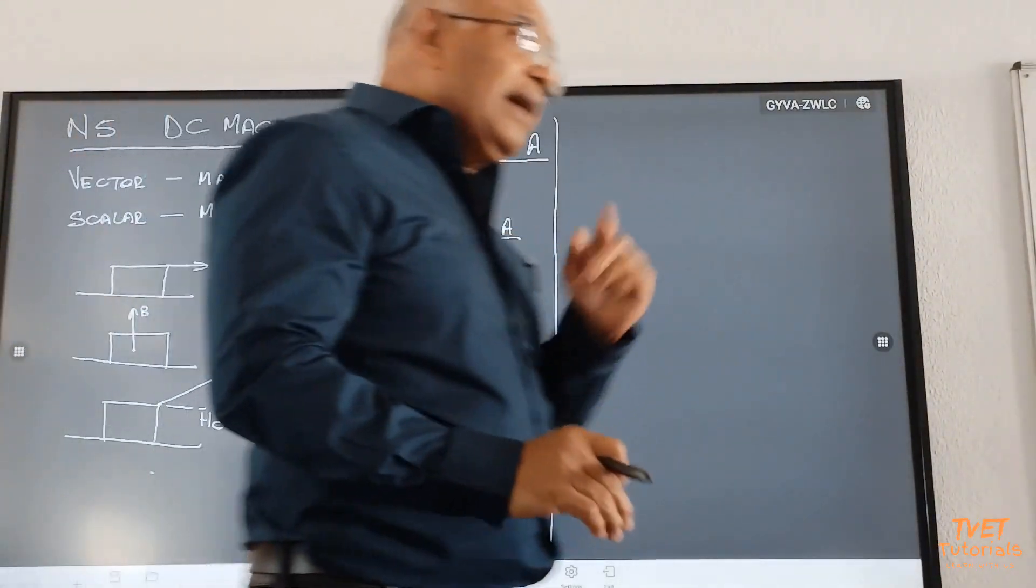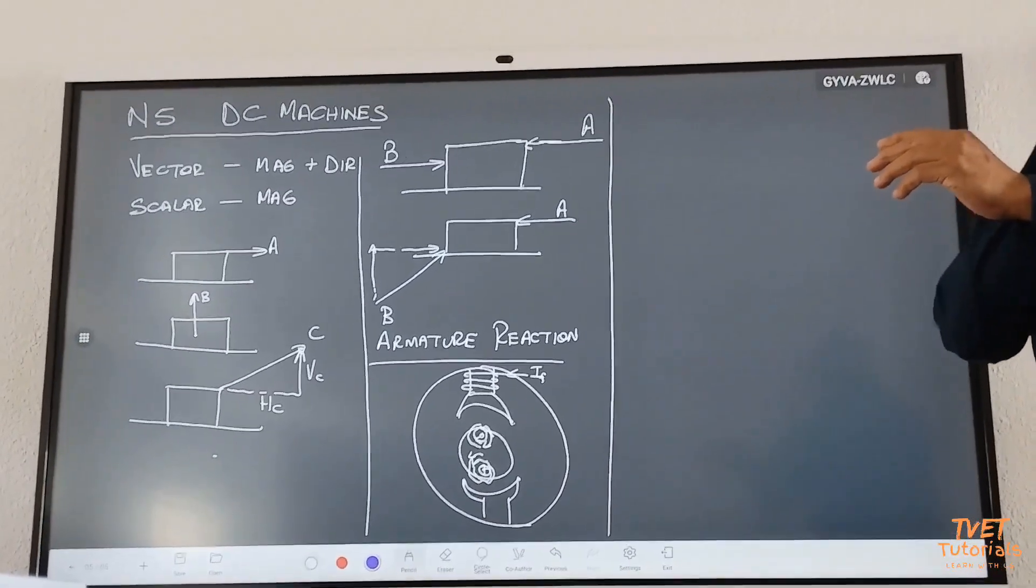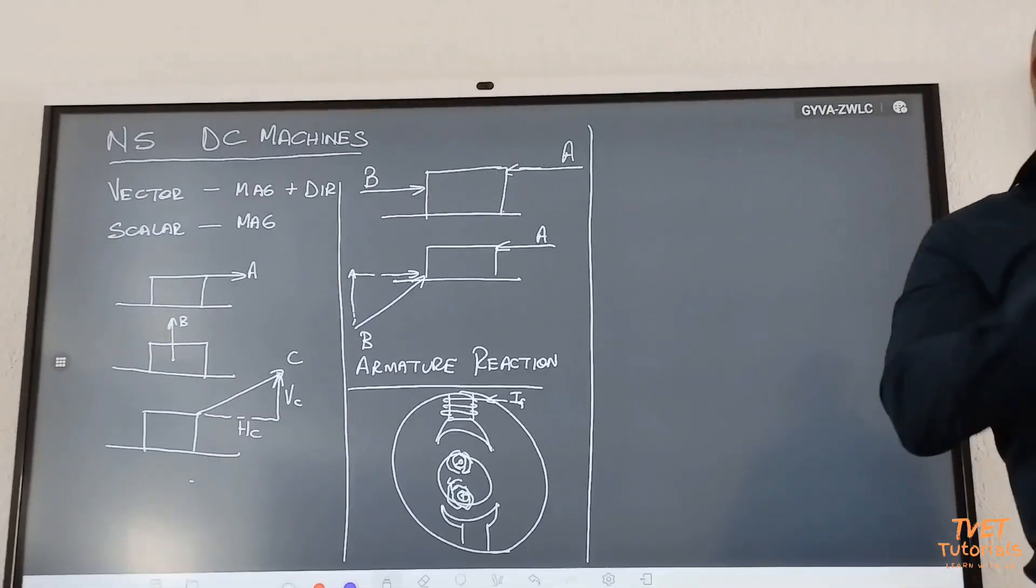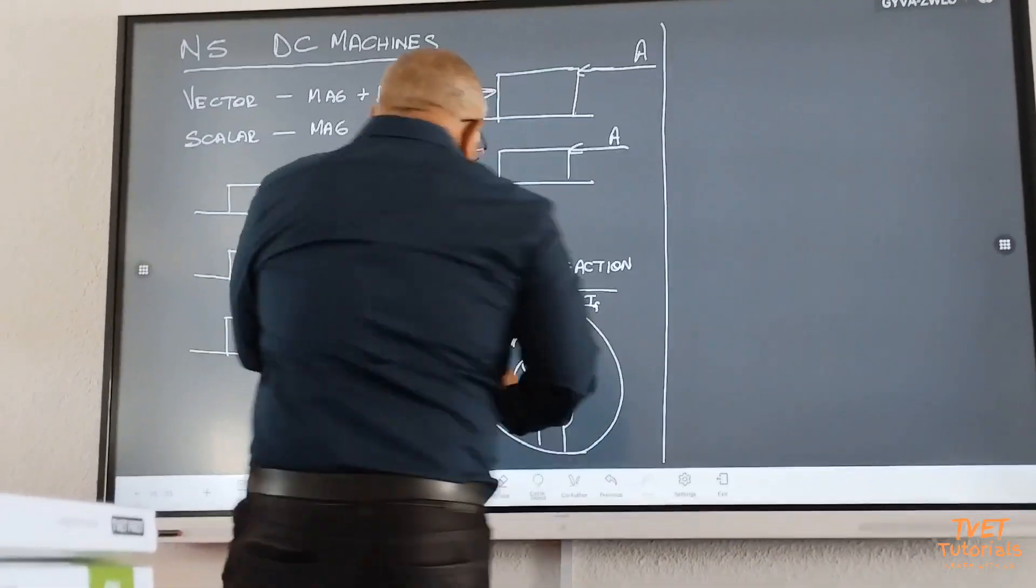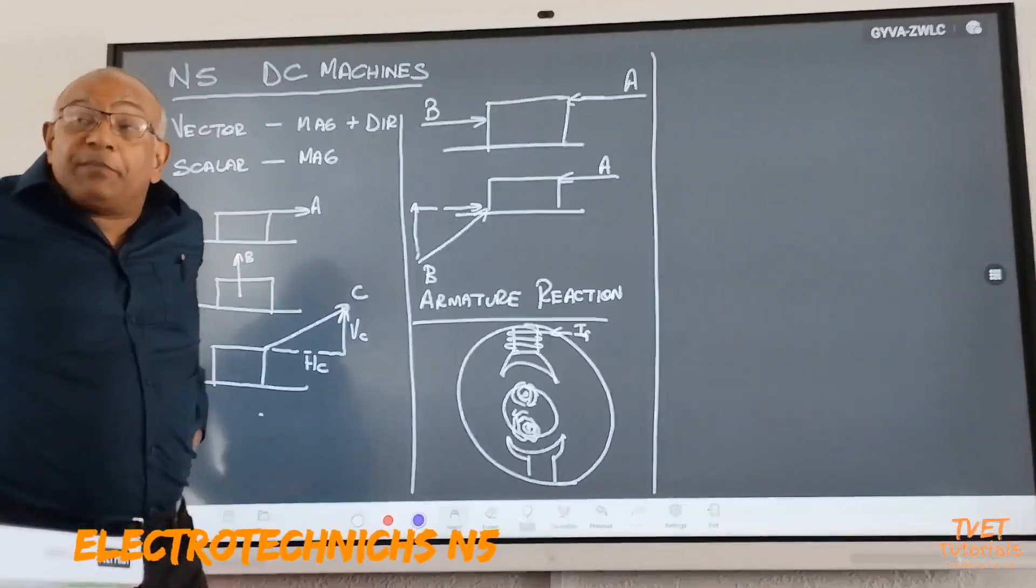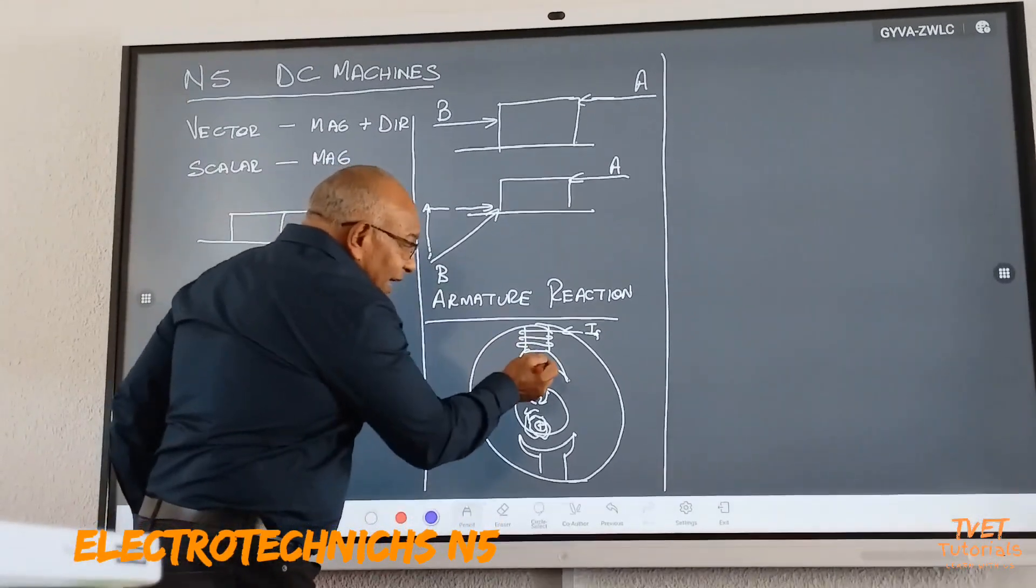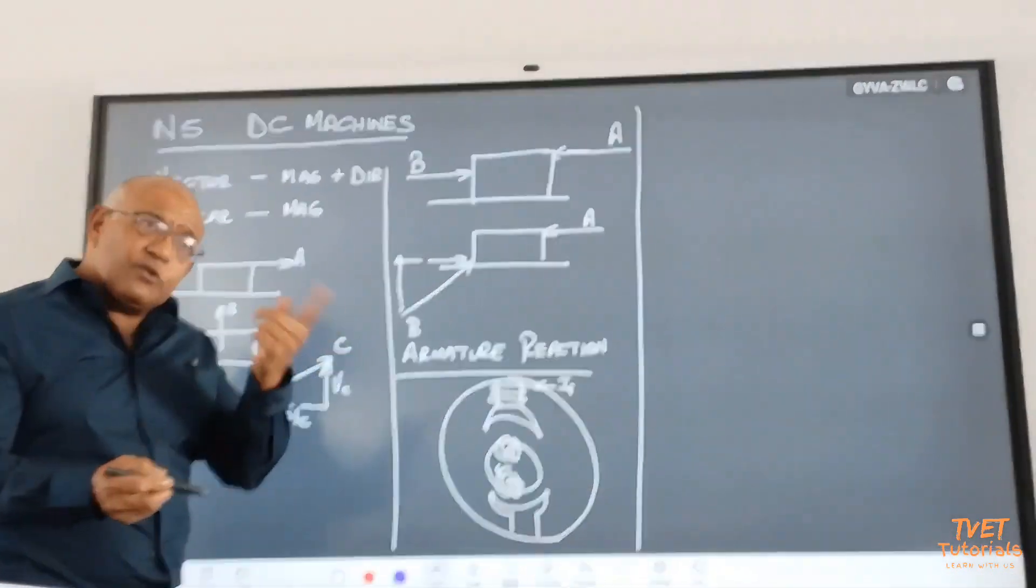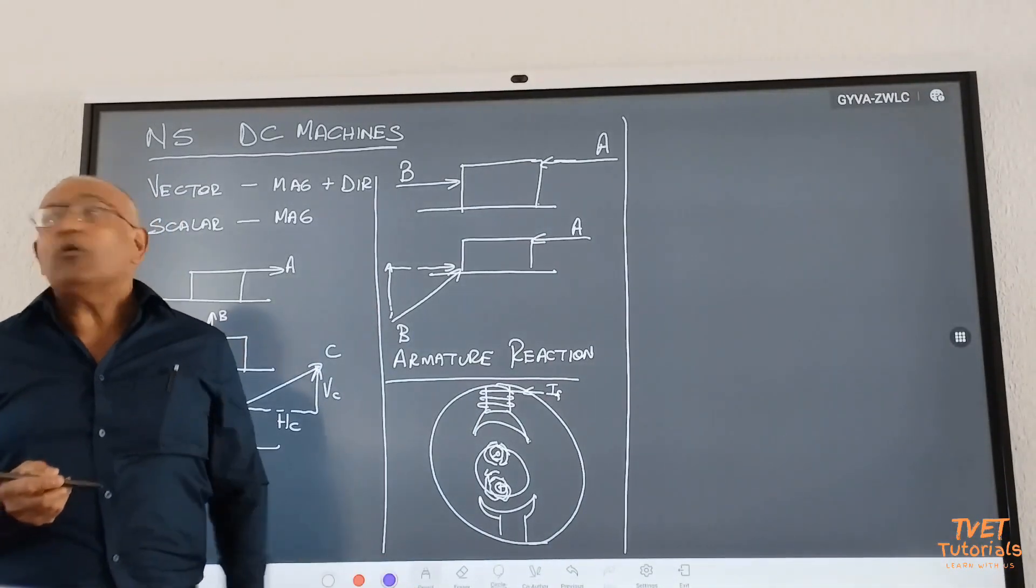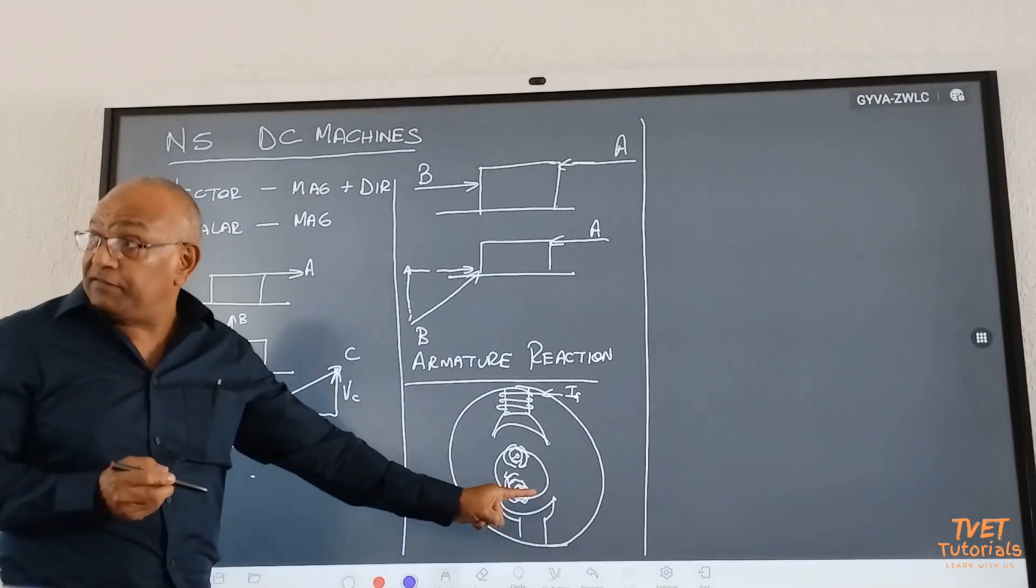Now, if you remember, magnetic lines of flux can never, ever intersect. Is that correct? So what happens? The main magnetic lines of flux previously, before the armature cut, they were flowing in a straight line from the north pole of the field system to the south pole. Can they still do that now? Why not? Because of the secondary magnetic line.